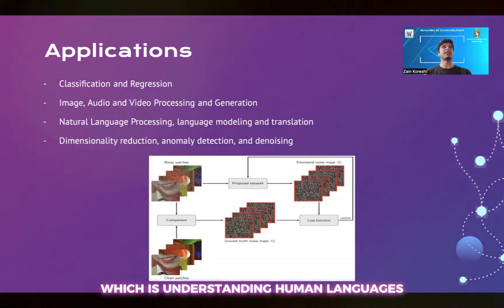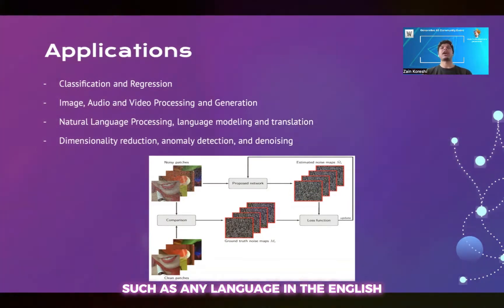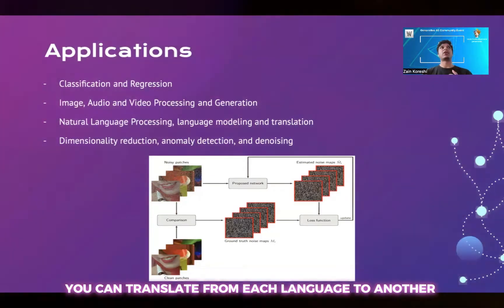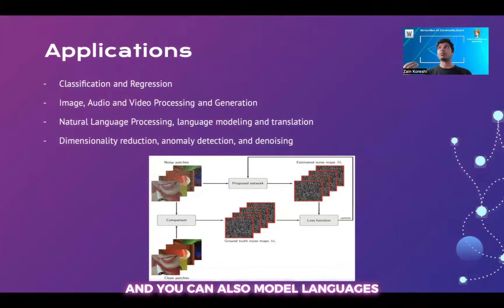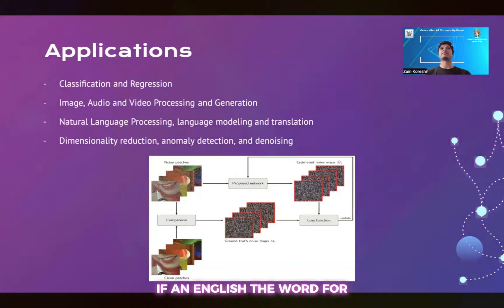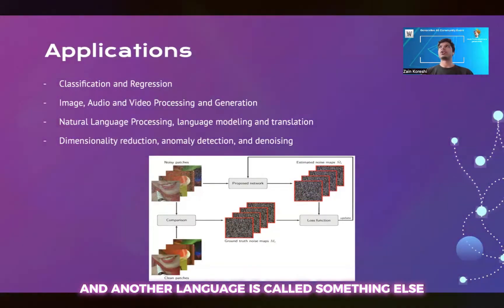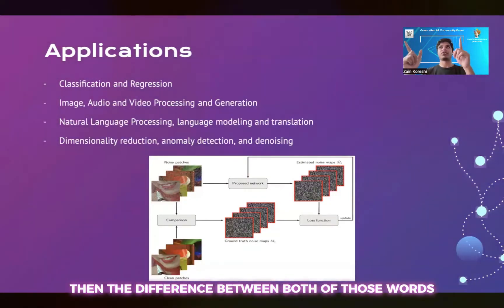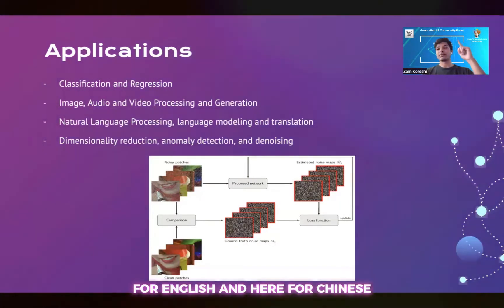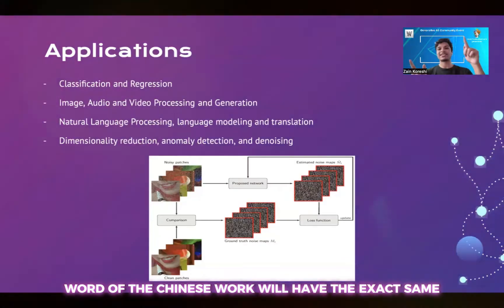You can also carry out natural language processing, which is understanding human languages — the ability of computers to understand any language, such as English, Chinese, Hindi, French, German, and more. You can also use it for translation, translating from one language to another. You can also model languages, meaning that if a word in English maps to a word in another language, the distance between those mapped words will correlate — so for each word, the English word and the Chinese word will have the exact same distance in that language space.